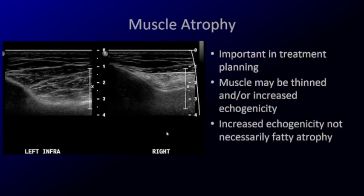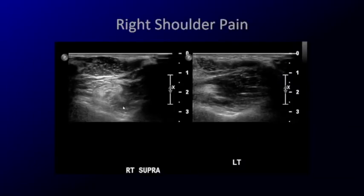Not all increased echogenicity within the muscle may be fatty atrophy. Here's an example looking at the supraspinatus muscle — here's the scapular spine in long axis. The supraspinatus muscle on the right is asymmetrically increased in echogenicity, but it is not decreased in size. That can be edema within the muscle, reaction to a tendon tear, or even a retracted tendon if there is a tendon rupture. So just beware that it's not always fatty atrophy.